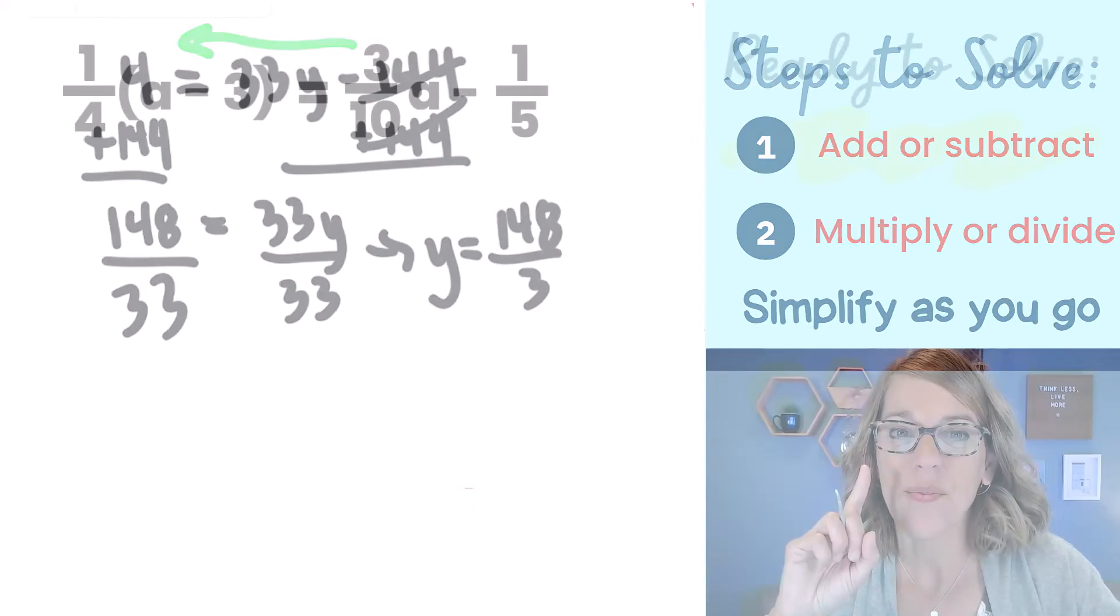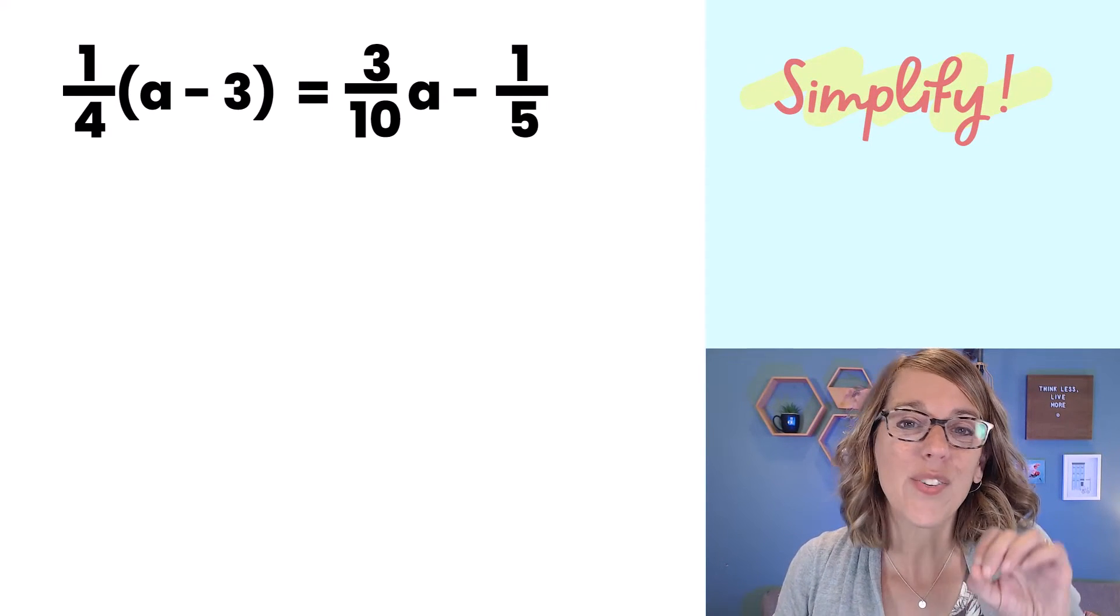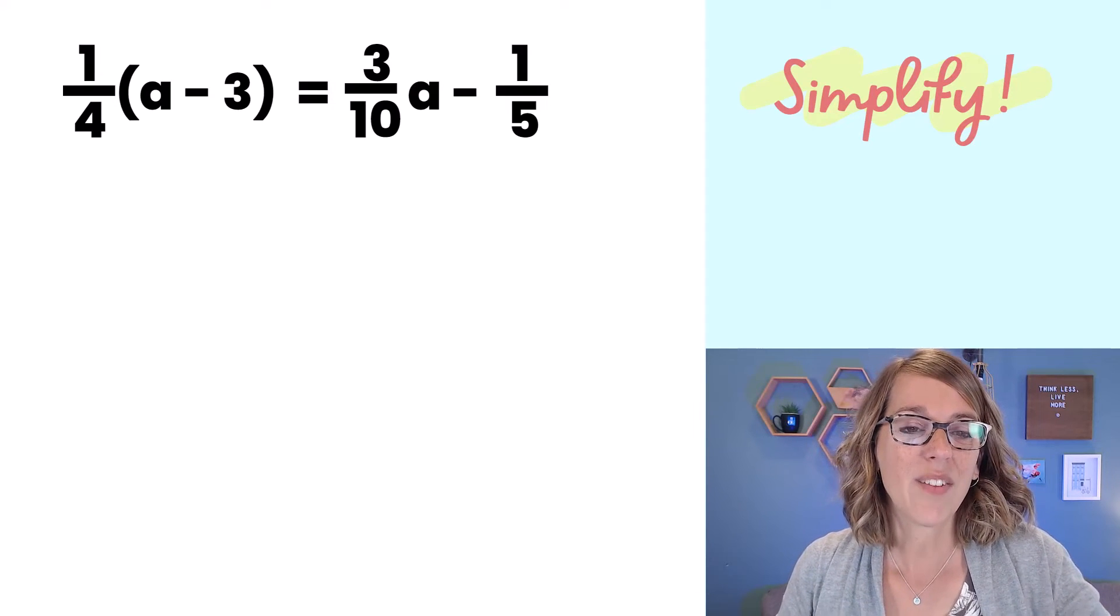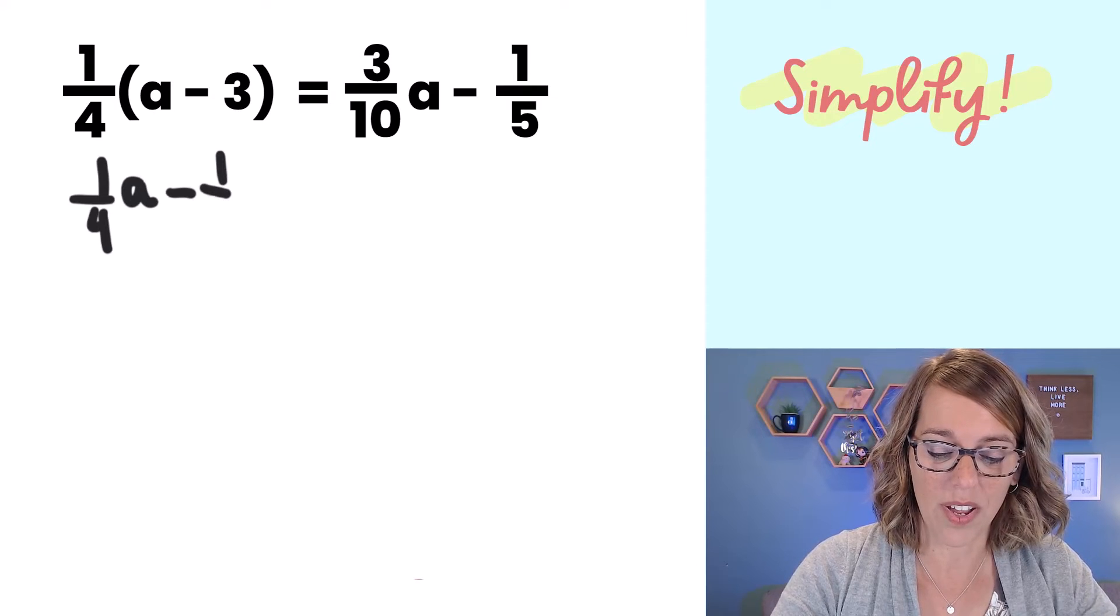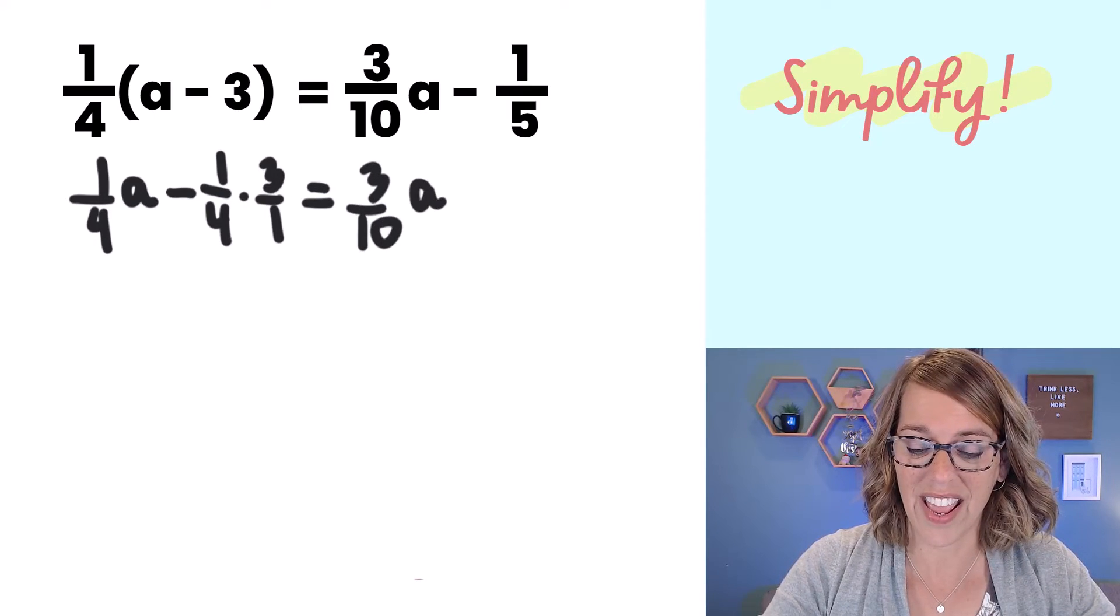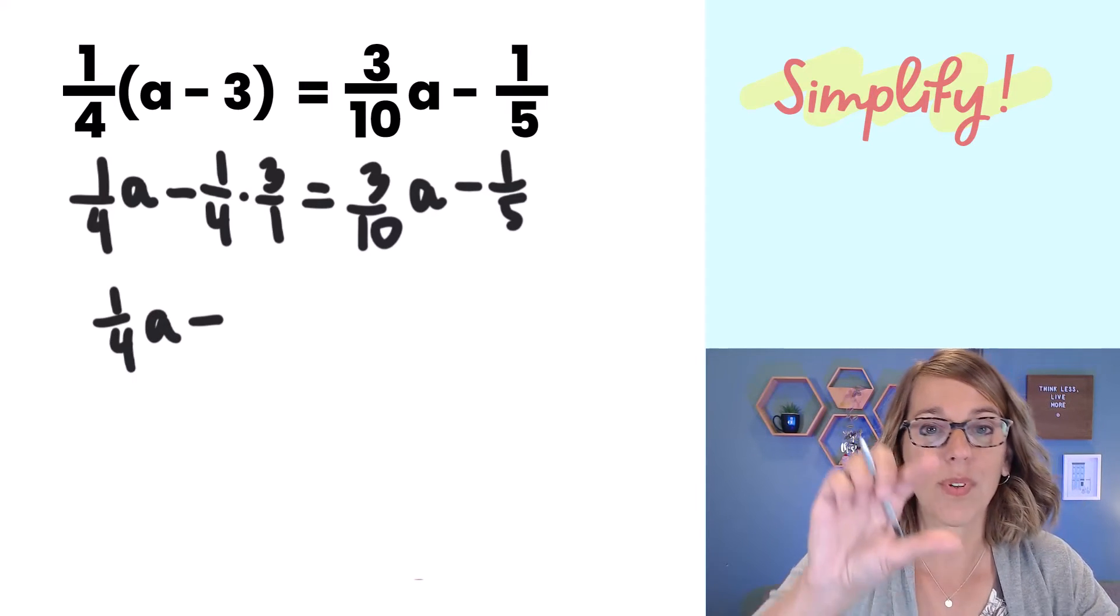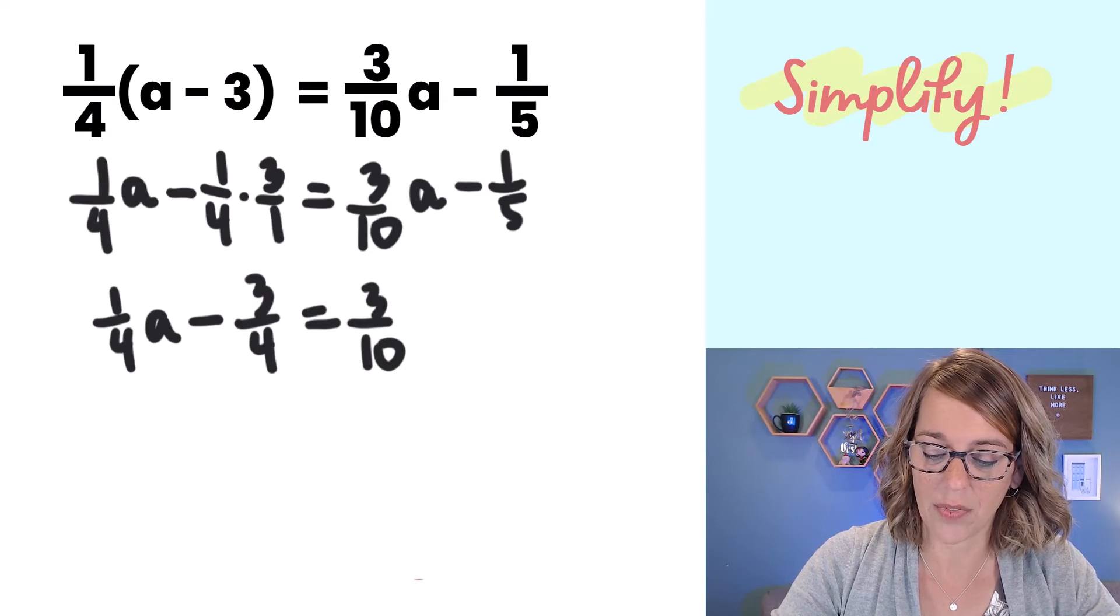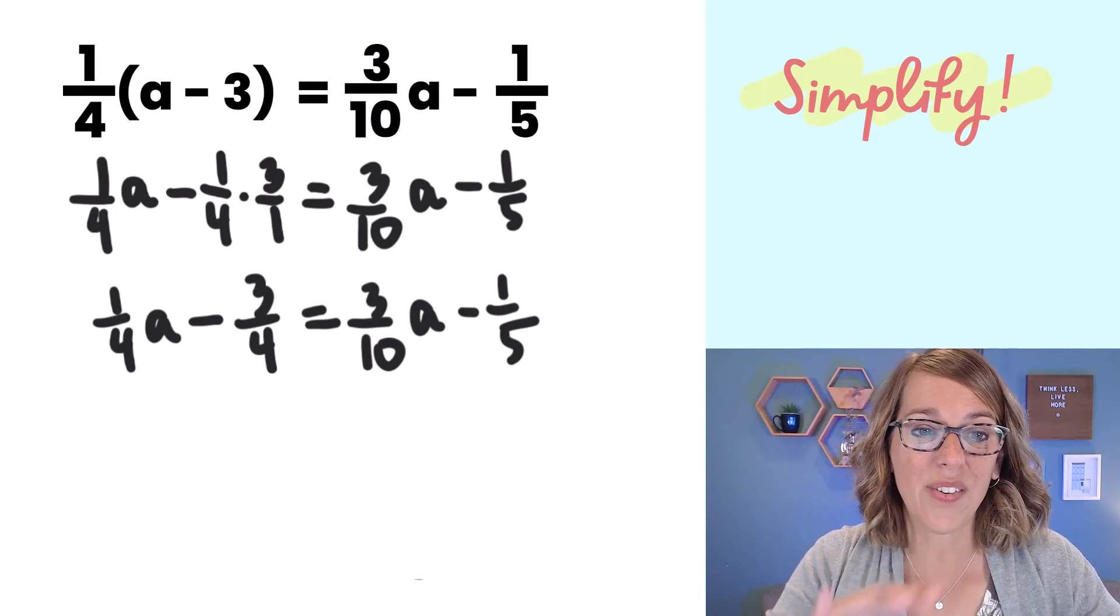Here comes our next example. What would you do first? I'm really hoping that you said simplify because that's exactly what we want to do. You could clear denominators at this point but it gets tricky with those parentheses so I would absolutely simplify this first and we need to multiply that 1/4 into the parentheses. As I do that I get 1/4 times a minus 1/4 times 3. Nothing to do on the other side so I get 3/10a minus 1/5. So that gives me 1/4a minus, multiplying this next one straight across, 3 times 1 is 3, 4 times 1 is 4, equals 3/10a minus 1/5.